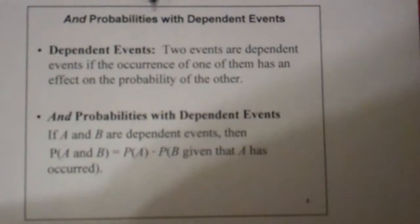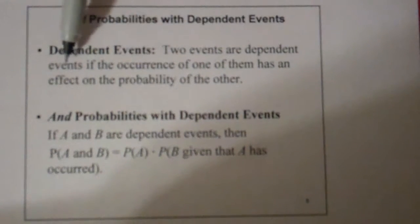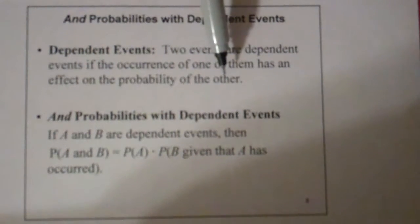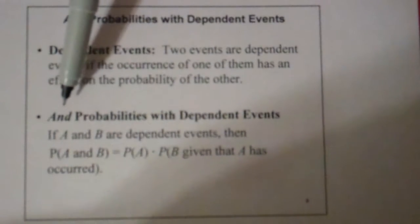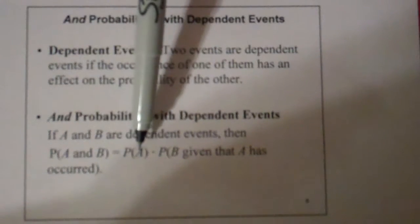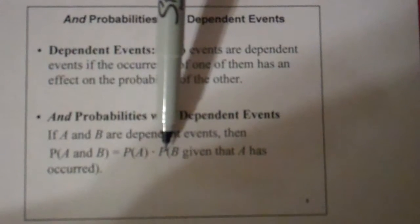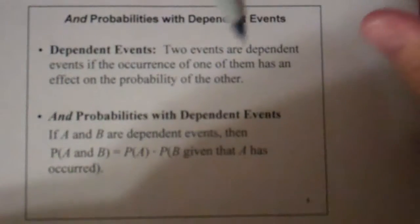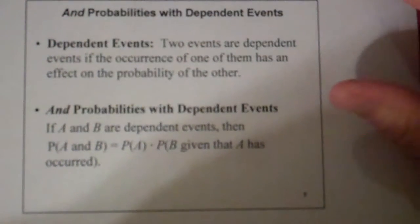AND probabilities with dependent events: two events are dependent if the occurrence of one of them has an effect on the probability of the other. So we're getting close to conditional probabilities — we're going to have to assume that something has happened. The probability of A and B is given A, and P is B given that A has occurred.